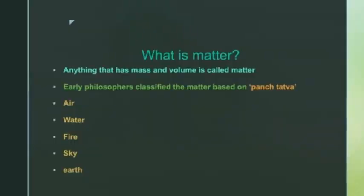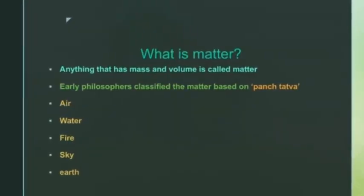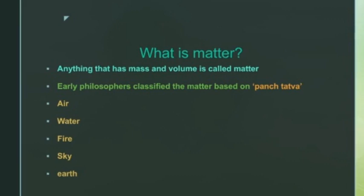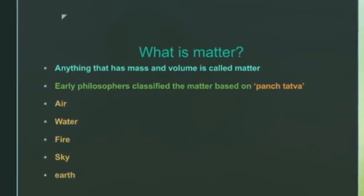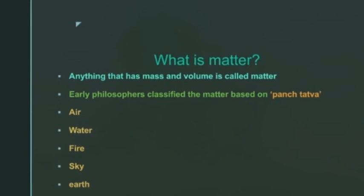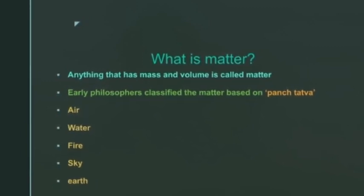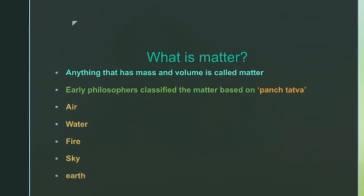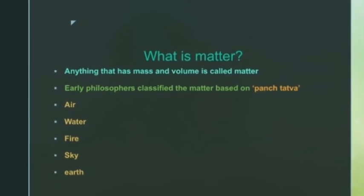So what is matter? As you can see here, anything that has mass and volume is called matter. According to early Indian philosophers, they classified matter based on Panch Tattwa: air, earth, fire, sky, and water.